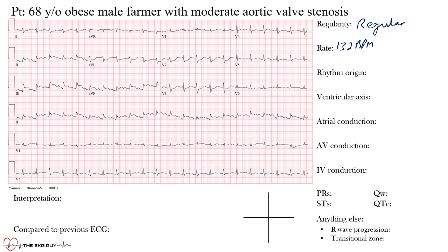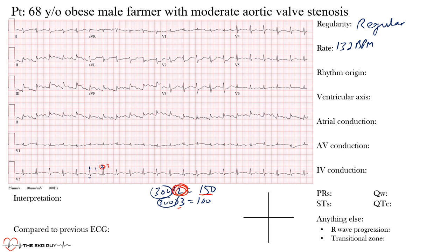Find a QRS complex that falls on one of the thick lines. Here one falls close to a thick line, and we spot the next R wave and count the thick lines between them — about two. So 300 divided by 2 is 150 beats per minute, and 300 divided by 3 is 100. The rate falls closer to 150 on that scale.